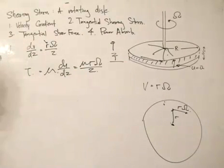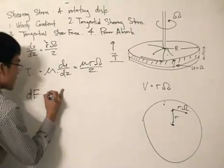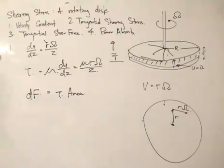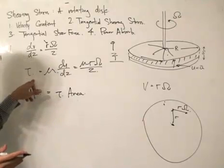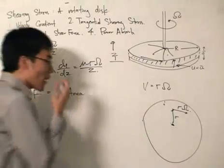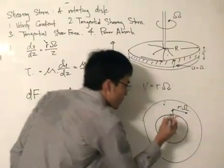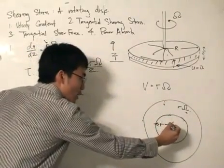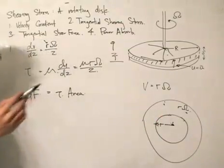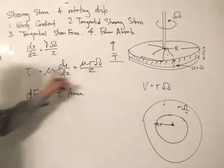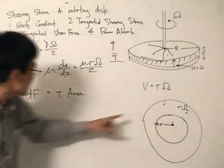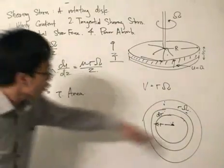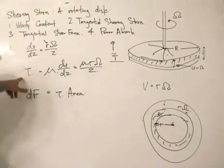This is where calculus comes in for the tangential shearing force. We define a small force dF equals tau multiplied by the area. We can only apply this formula where the shearing stress is constant. Because shearing stress is dependent on r, we consider a thin annular strip at radius r. All points around this strip at the same r will have the same shearing stress. We then consider a small width dr around the disc.